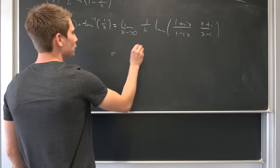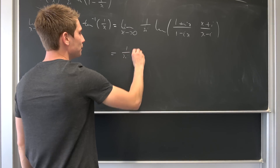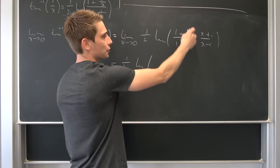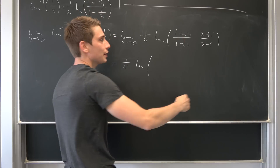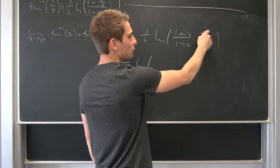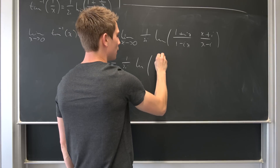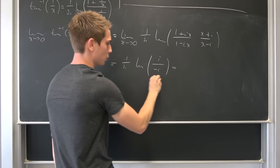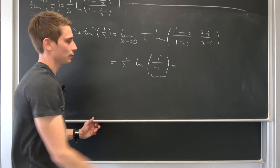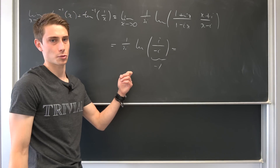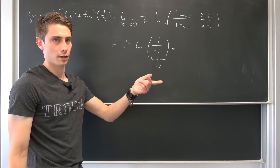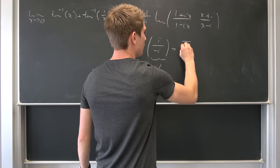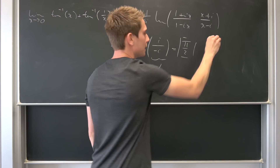We end up with 1/(2i)·ln(1 · (i/(−i))). As x → 0, the ix terms vanish giving 1, and i over −i = −1. So we have 1/(2i)·ln(−1) = 1/(2i)·iπ = π/2. Then we are done — all cases considered.